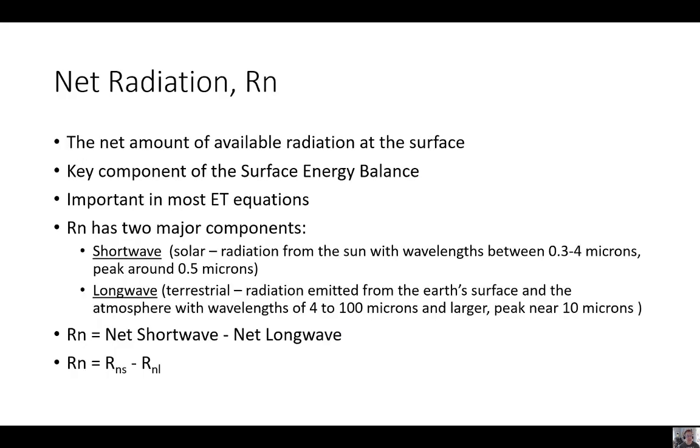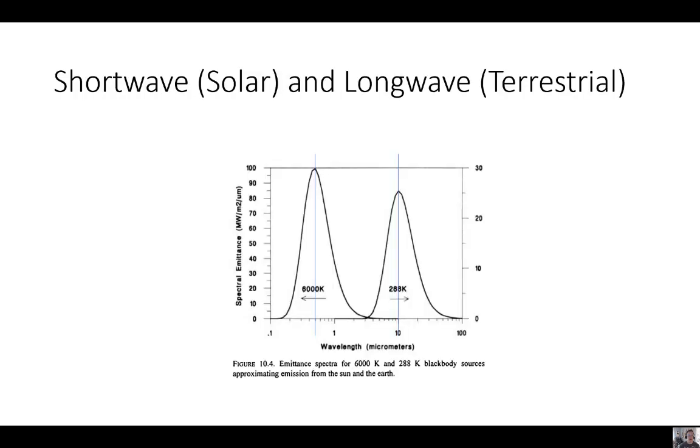Net radiation is the net amount of available energy at the surface. It has the two components, the shortwave and the longwave, or you could call it terrestrial or IR. When we calculate net radiation, we calculate the net shortwave and subtract the net longwave. Just reminding you that the shortwave component has a maximum wavelength around 0.5 microns, where the longwave component that we can't see has a maximum around 10 microns.